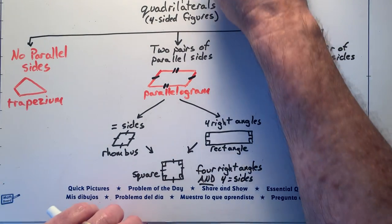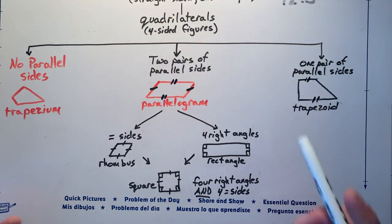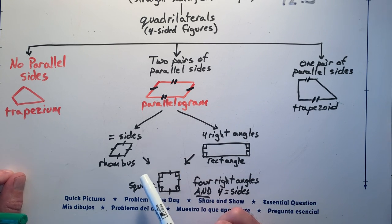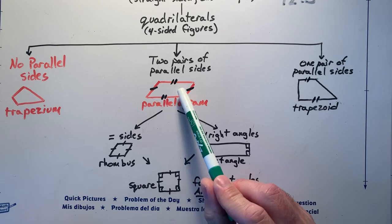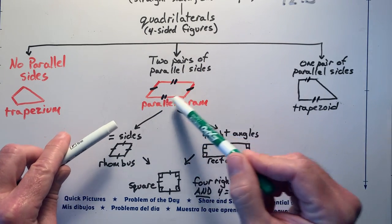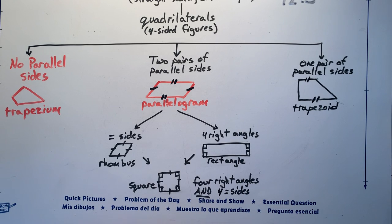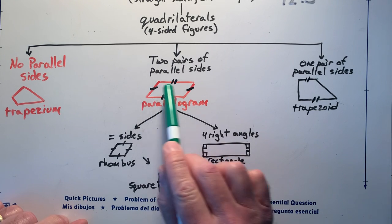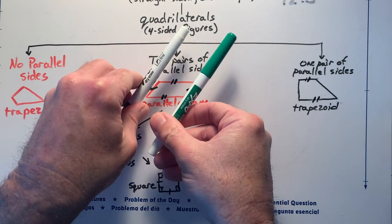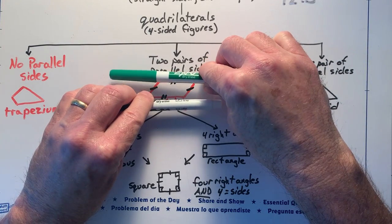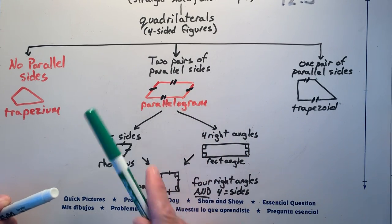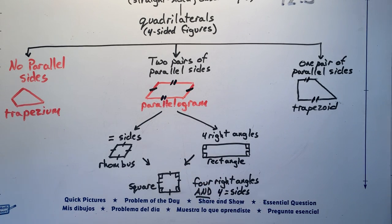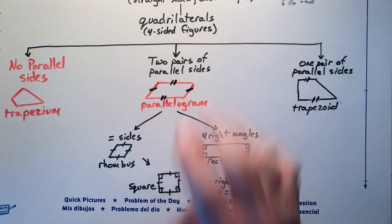Now we're going to look at the main section here — the parallelogram. I put parallelogram in red again because in third grade you are not required to know this word, but you should know what a parallelogram is. A parallelogram is any quadrilateral with four sides that has two pairs of parallel sides. Notice the opposite sides are parallel to each other — these two are parallel, and these two are parallel. That is two pairs of parallel sides for a total of four sides.